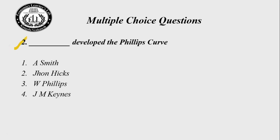Let us go to the next question. 30 seconds for this question — try to solve yourself, after that I will do the explanation. Time up. A.W. Phillips developed the Phillips curve. So the right answer for this question is choice number three.